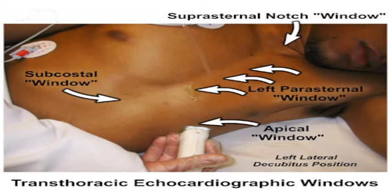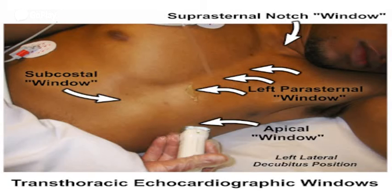The first and most important view is the left parasternal view, which can be long axis or short axis. For the parasternal window, the patient can be in the supine position or the left lateral position. Most views are obtained with the patient in the left lateral position, with the right hand straight and the legs slightly flexed. An advantage of this window is that it can also be obtained when the patient is on a ventilator in the supine position.